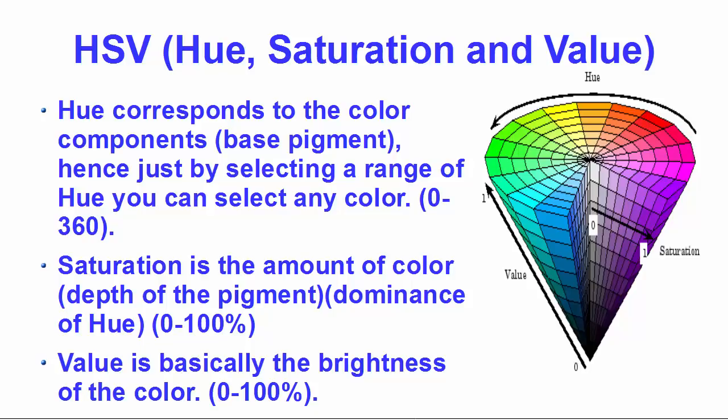In RGB color space, all channels are correlated to color luminance — what we loosely call intensity. In other words, we cannot separate color information from luminance. HSV, or hue saturation value, is used to separate image luminance from color information. This makes it easier when we need to work with luminance, and that is why we generally use HSV in situations where color description plays a very important role.